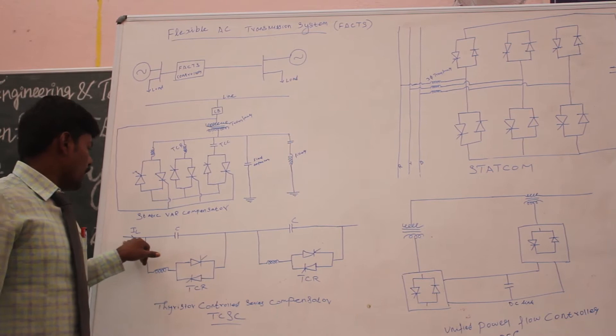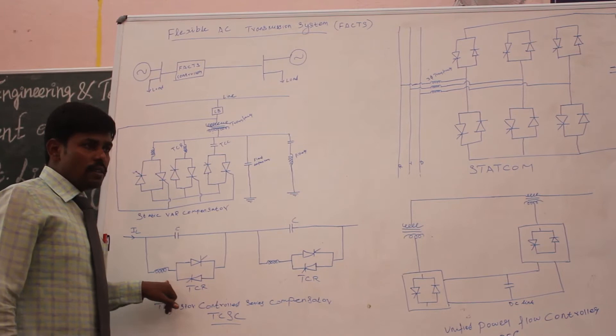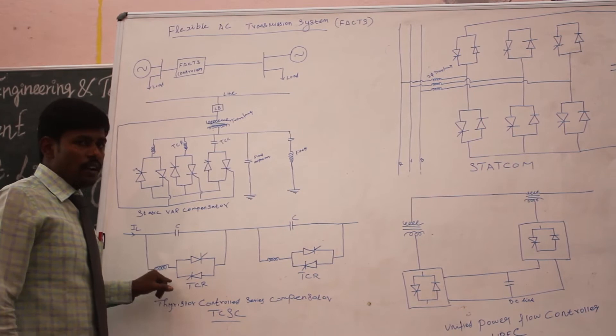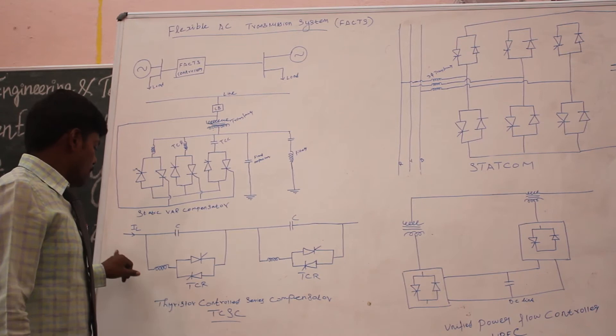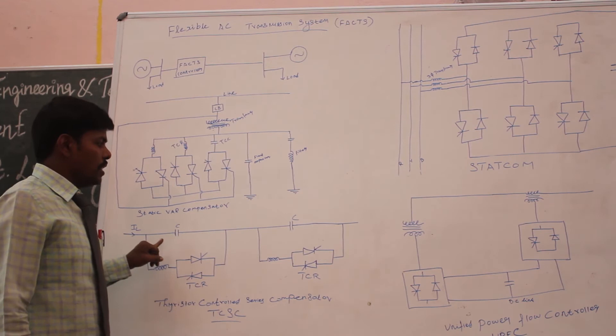Here I have the transmission line. This transmission line is connected to the series capacitor one by one. This is the series capacitor connected to the thyristor controlled reactor. This thyristor controlled reactor is used for regulating the voltage under the transient condition. This thyristor controlled series compensator, under transient conditions in the power system, acts as a voltage regulator, regulating from the transient to the steady state condition.